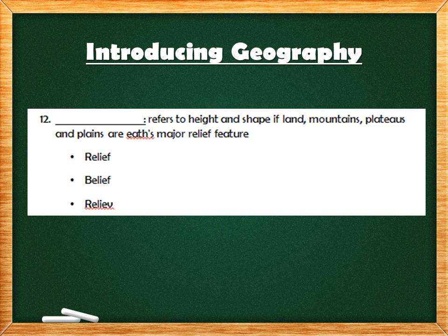Question 12: blank refers to height and shape of land. Mountains, plateaus and plains are Earth's major relief features. There is a hint in it, so the answer is relief — R-E-L-I-E-F. The first answer option is correct.